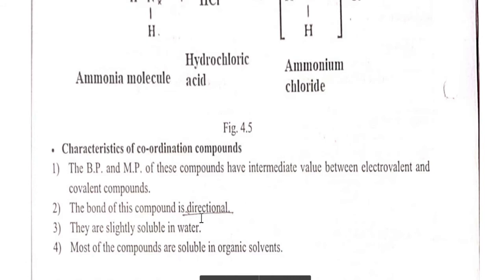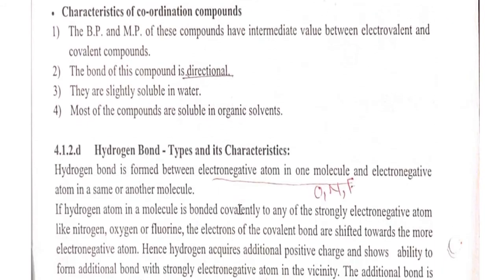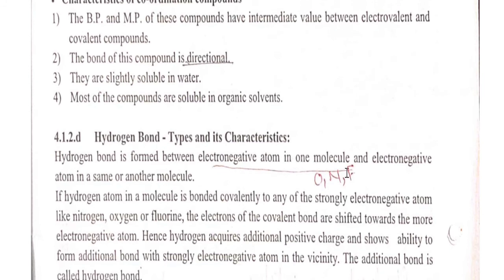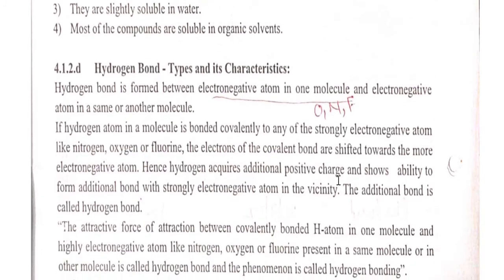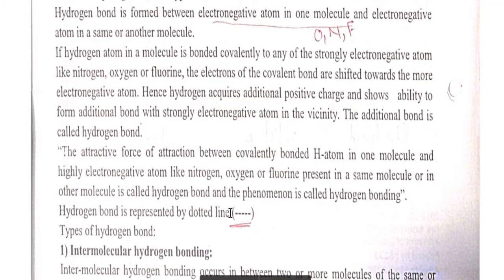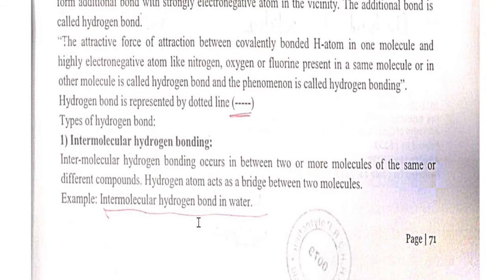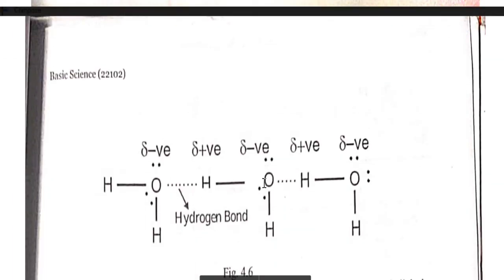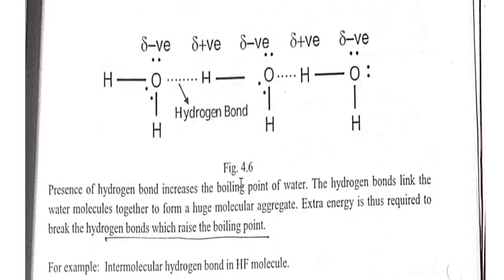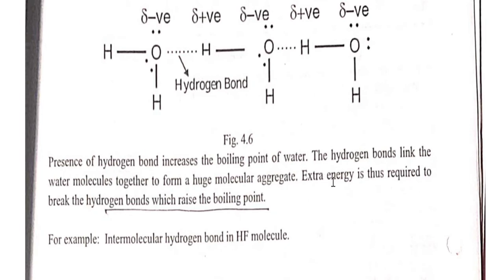An important property of the coordinate bond is that it is a directional bond. Hydrogen bond is formed between an electronegative atom in one molecule and an electronegative atom in the same or another molecule — that is oxygen, nitrogen, or fluorine — one of which must be bonded to hydrogen. It is denoted by a dotted line. The two types are intermolecular and intramolecular hydrogen bond. Intermolecular hydrogen bond is present in water. Extra energy is required to break hydrogen bond; therefore the rise in boiling point of water is due to hydrogen bonding.